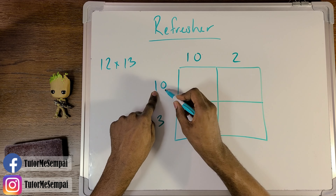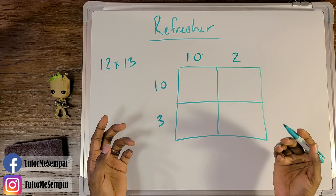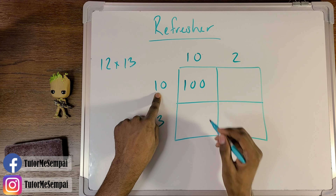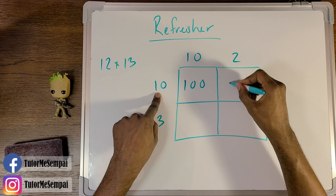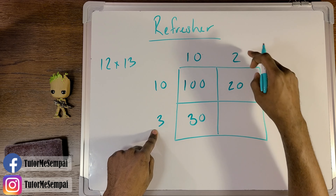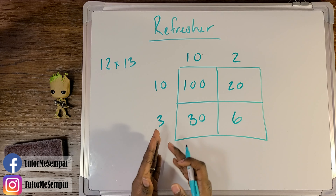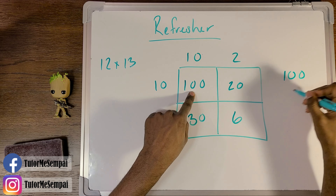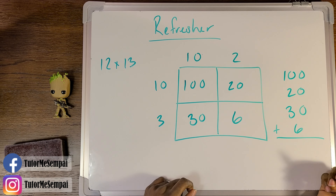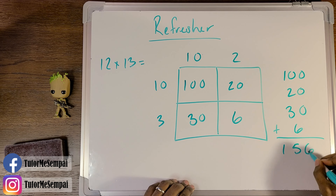You're going to do 10 times 10, 10 times 2, 3 times 10, and then 3 times 2 — everything on the side gets multiplied by everything on the top, and you put the results in these boxes. So 10 times 10 is going to go here, and we know that to be 100. 10 times 2 is going to go here, and we know that to be 20. 3 times 10 goes here, and we know that to be 30. And then 3 times 2 goes in our last box, and we know that to be 6. Once you have all of these, you simply add everything: 100 plus 20 plus 30 plus 6. And when you add all of that, that's going to be your final answer.